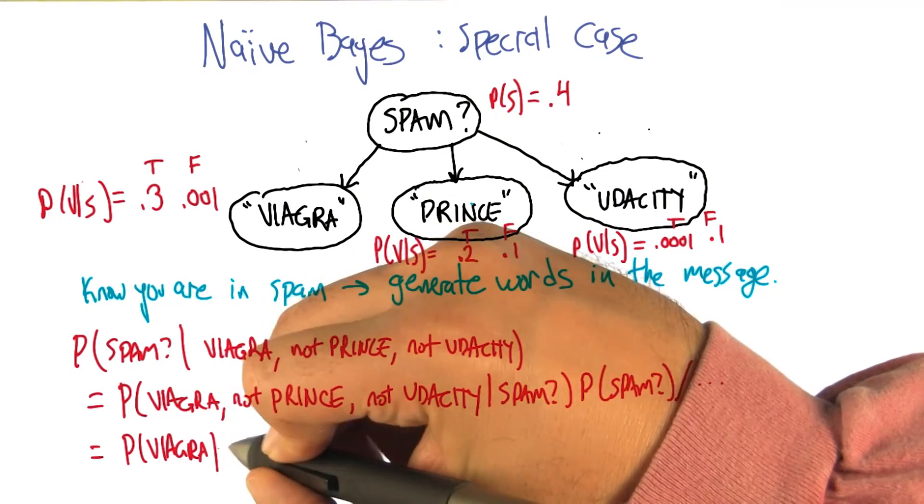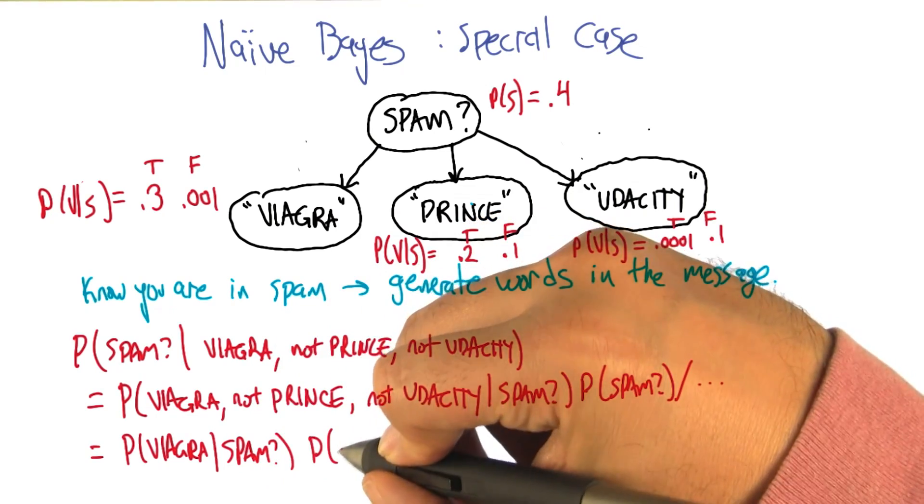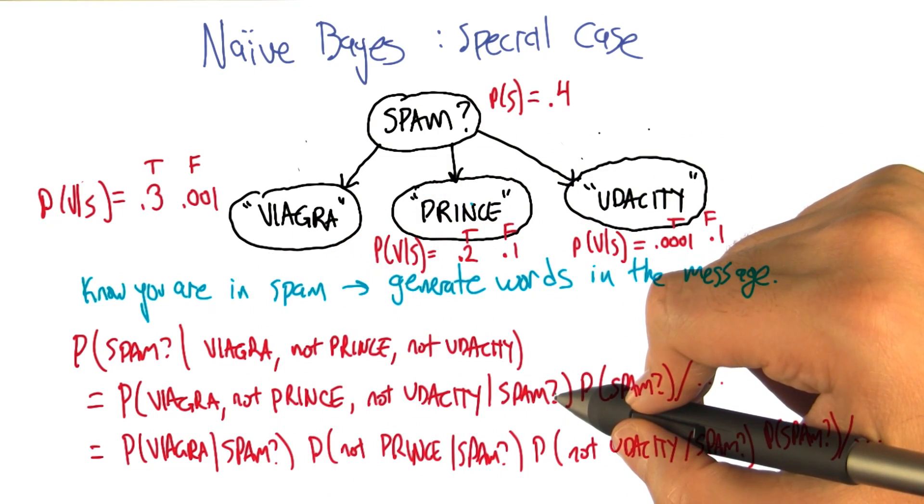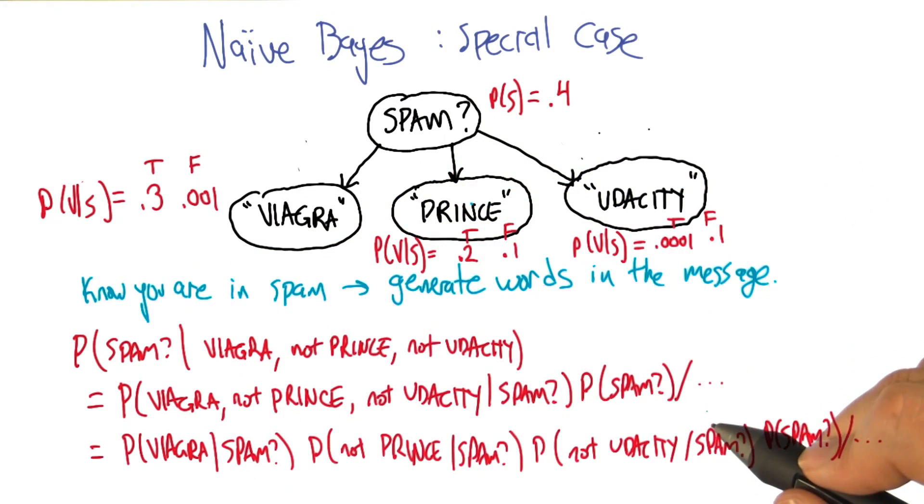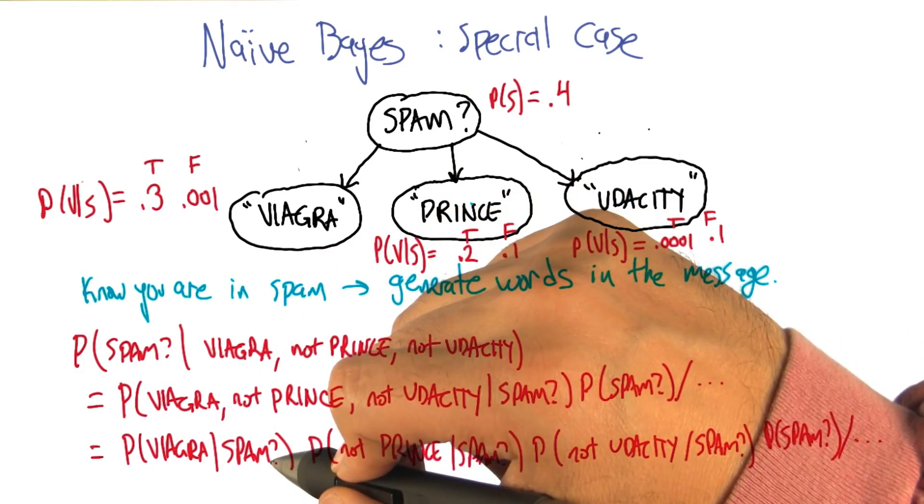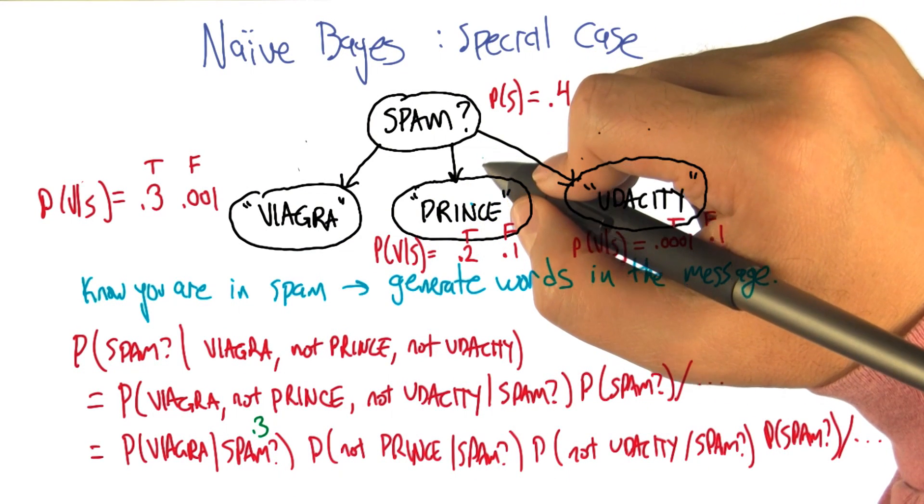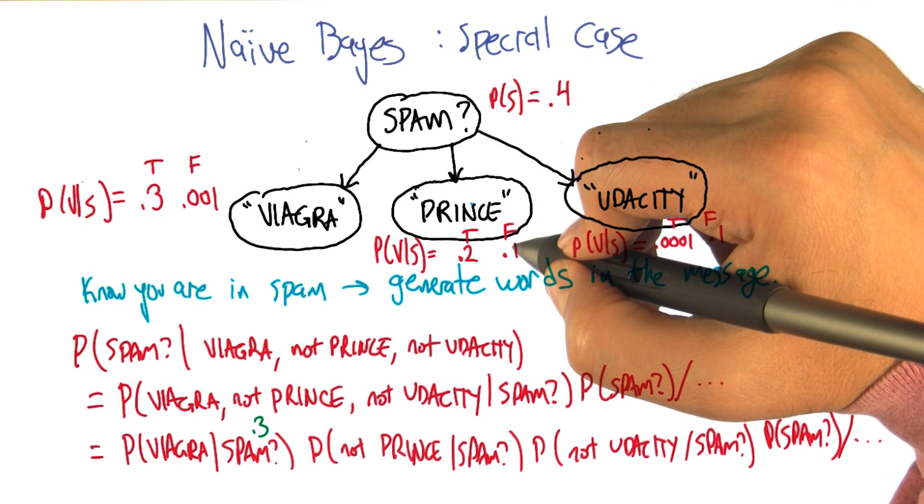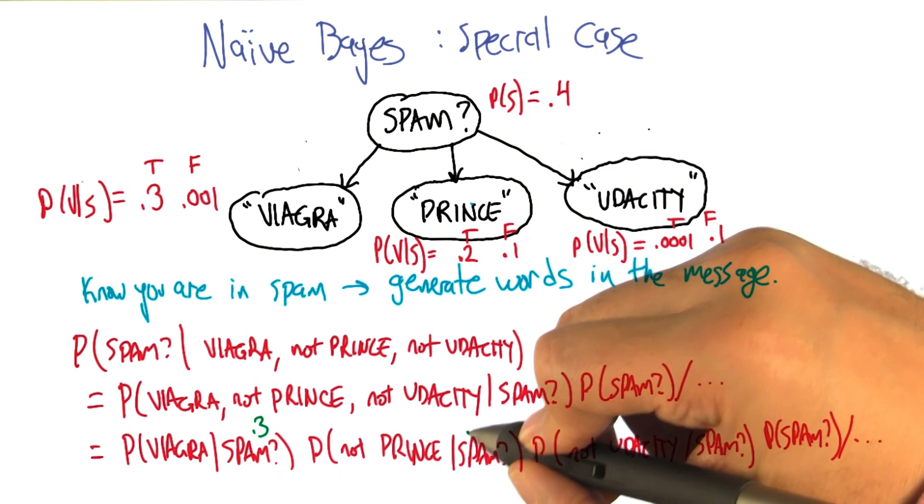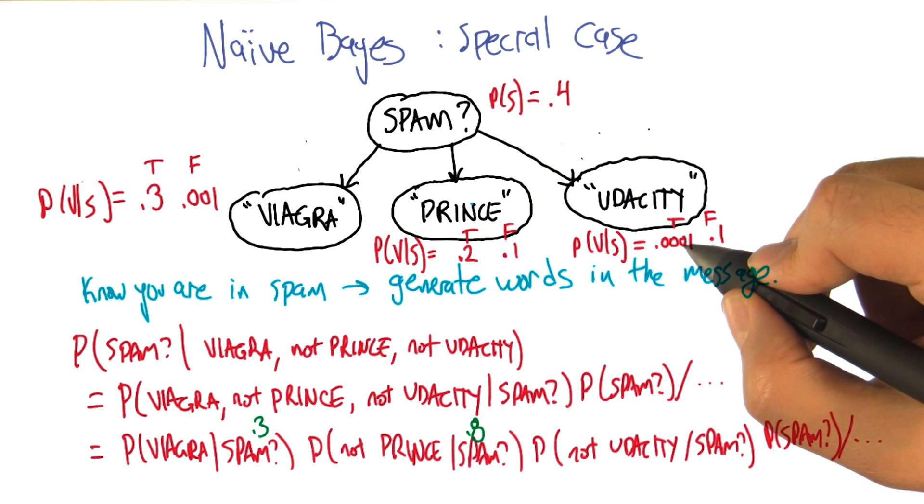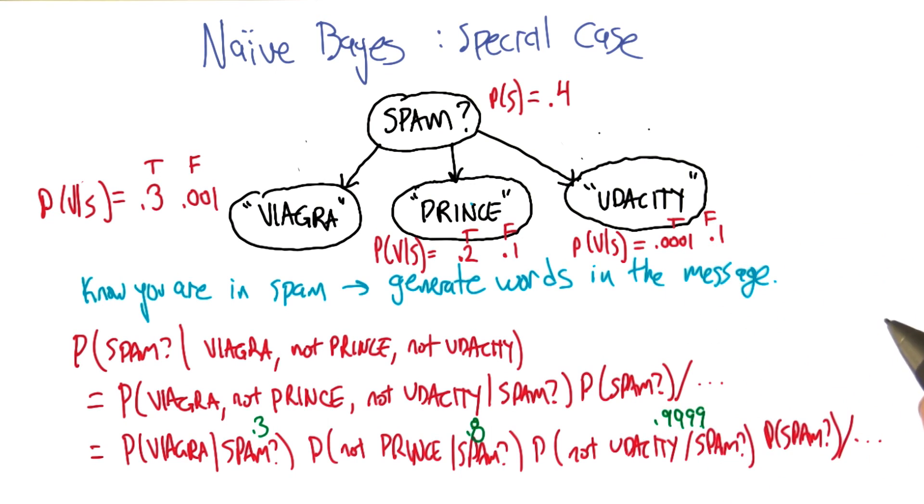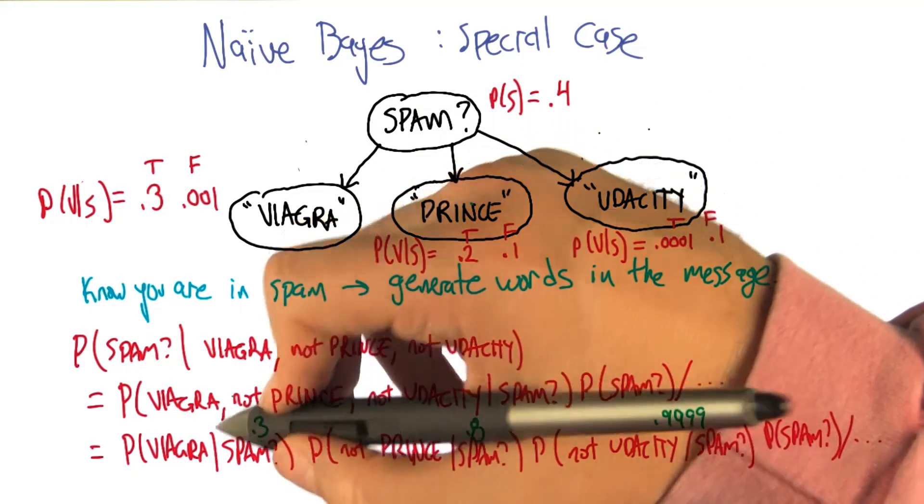Yeah, so this is a really convenient structure, because it really just decomposes into all these separate helpful quantities. So in particular, we can actually derive this by applying the chain rule. But what we end up with is that this joint probability over these three variables decomposes into a product of three independent joint probabilities. The probability that it contains Viagra, given that it's spam, which we have, that number is 0.3. The probability that prince doesn't appear in it, given that it's spam, should be 0.8, because 1 minus the 0.2. And that it's not Udacity, given that it's spam, is going to be 1 minus this 0.0001, which would be 0.9999. So this is the case when it is spam. And if it's not spam, we can do the same thing and get a product. And then we can normalize to get the relative probabilities between it being spam and not spam.